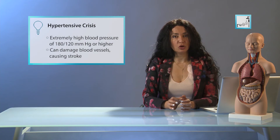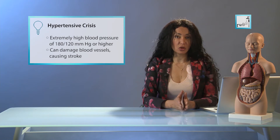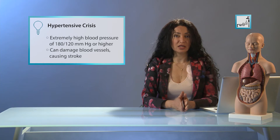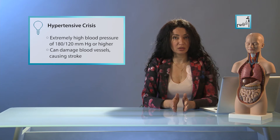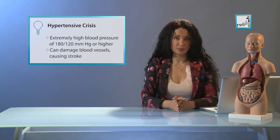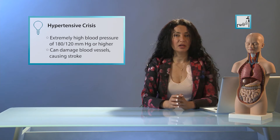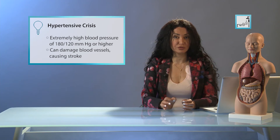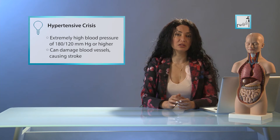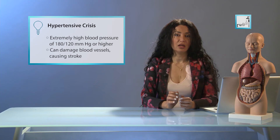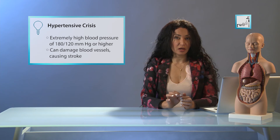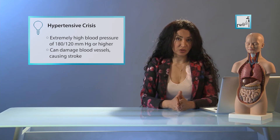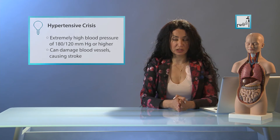If, while monitoring your blood pressure, you get a systolic reading of 180 or higher, or a diastolic reading of 110 or higher, wait a couple of minutes and take it again. If the reading is still at that value or above that level, you should seek immediate medical help. You might be having a hypertensive crisis and it's life-threatening, so please go to the doctor immediately.